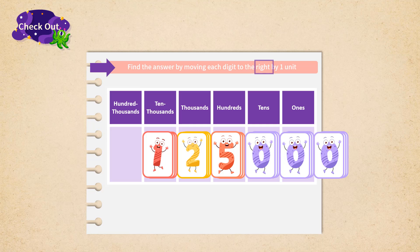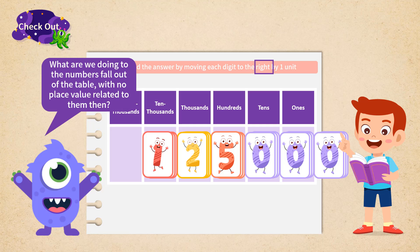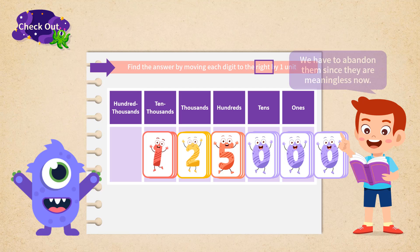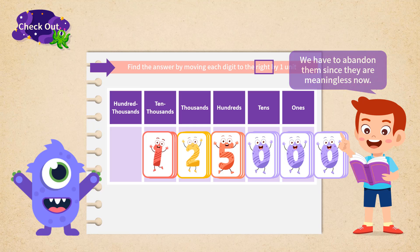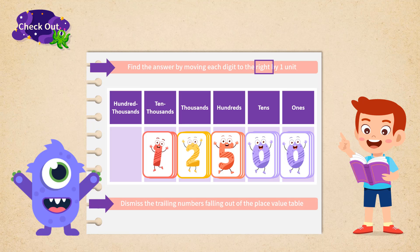'What are we doing with the numbers that fall out of the table with no place value related to them?' asked Lumos. 'We have to abandon them since they are meaningless now,' answered Timmy. Now, after dismissing the trailing numbers falling out of the place value table, we can find the number after transformation is 12,500.